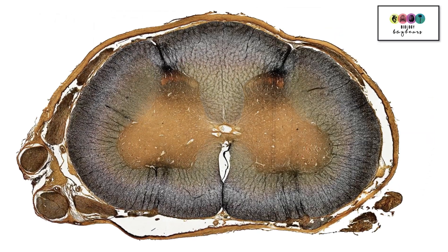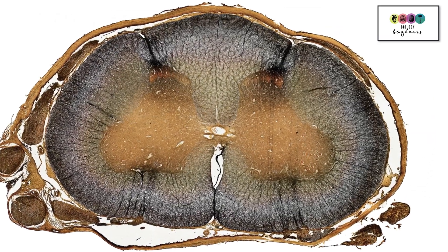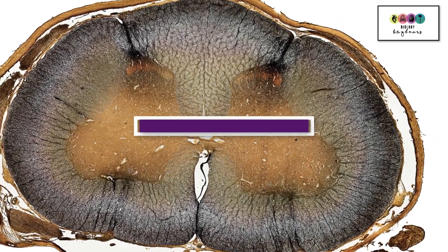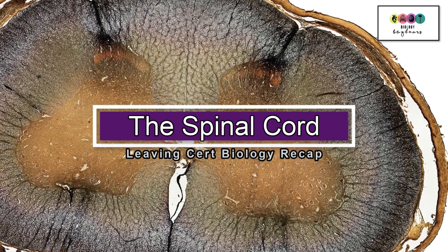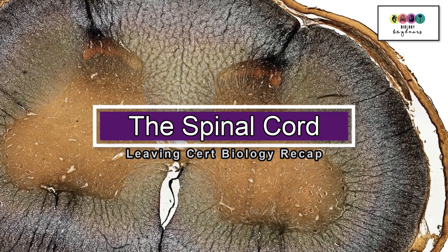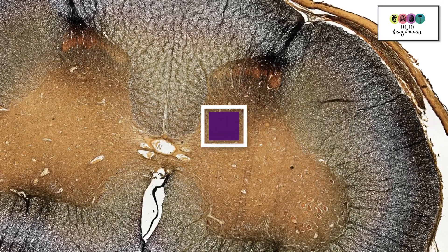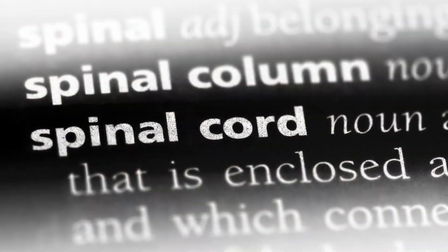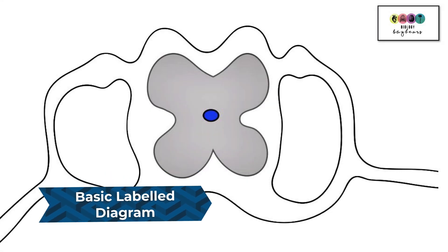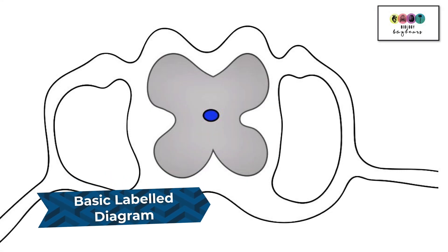The aim of this video is just to go over the spinal cord. This video is a fast recap on the spinal cord geared towards Leaving Cert biology, and it's all part of the chapter on the nervous system, which is a chapter filled with diagrams. The spinal cord has a good few diagrams including the reflex arc, and the first thing to do is to always get a good basic labelled diagram and make sure that you can reproduce one.